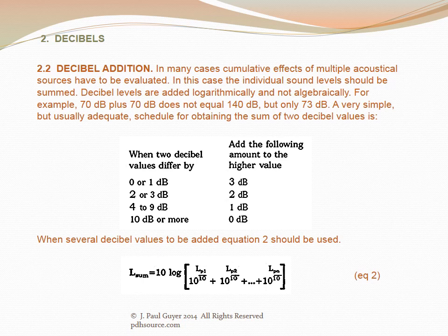Decibel levels are added logarithmically, not algebraically. For example, 70 dB plus 70 dB equals 73 dB, not 140 dB. A simple schedule for summing two decibel values: when they differ by 0–1 dB, add 3 dB to the higher value; differ by 2–3 dB, add 2 dB; differ by 4–9 dB, add 1 dB; and if they differ by 10 dB or more, add 0 dB to the higher value.